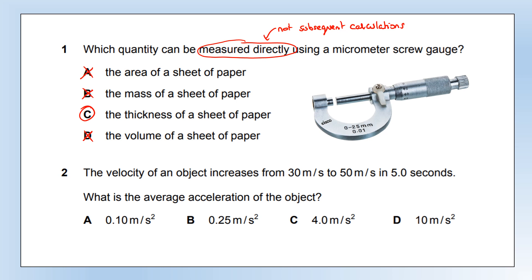Question two: the velocity of an object increases from 30 metres per second to 50 metres per second in five seconds. What is the average acceleration? The equation for average acceleration is the change in velocity divided by the time in which that change occurs. Using V for final velocity and U for initial velocity, we do final minus initial — that's how we calculate a change. Plugging those numbers in gives us 4 metres per second squared, so that's option C.